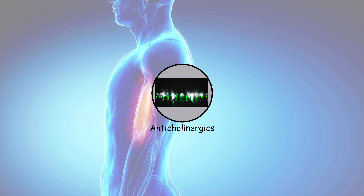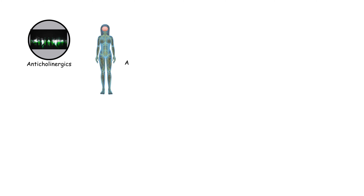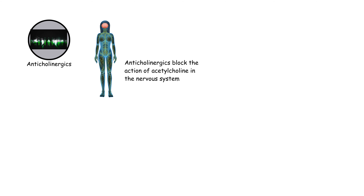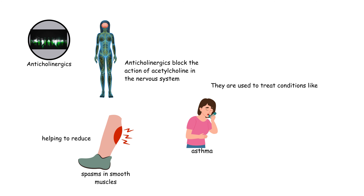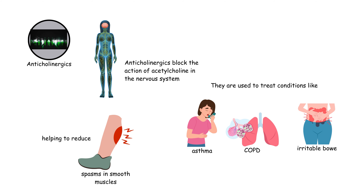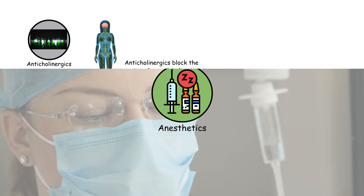Anticholinergics block the action of acetylcholine in the nervous system, helping to reduce spasms in smooth muscles. They are used to treat conditions like asthma, COPD, and irritable bowel syndrome.